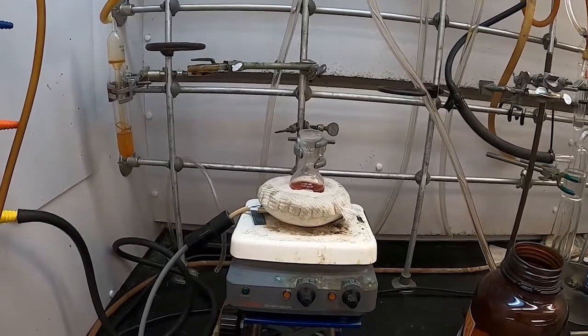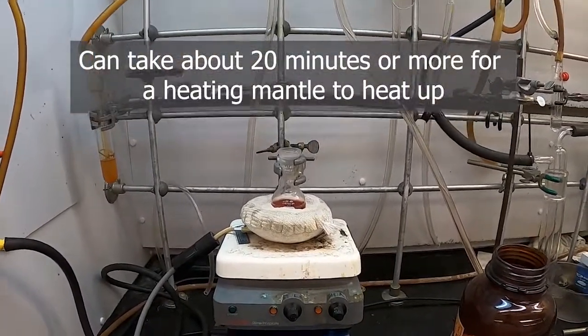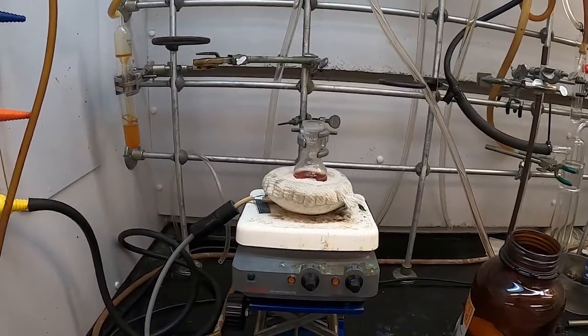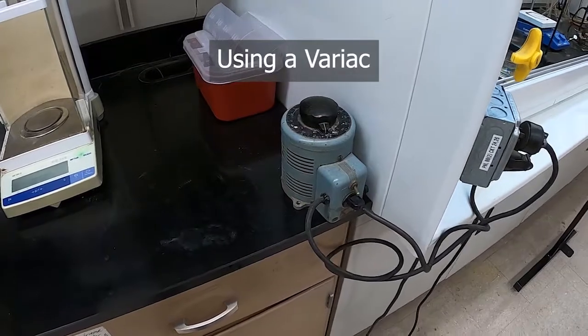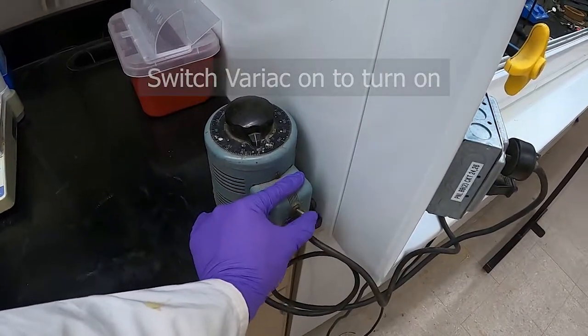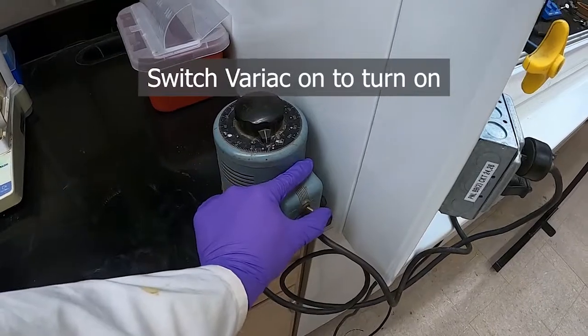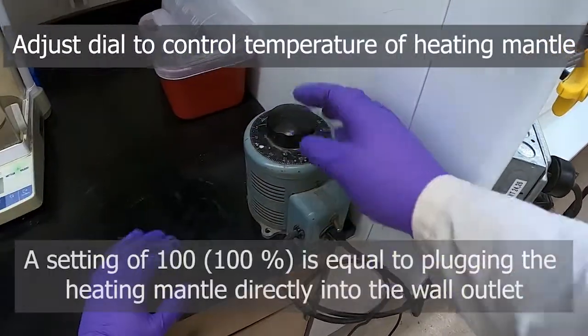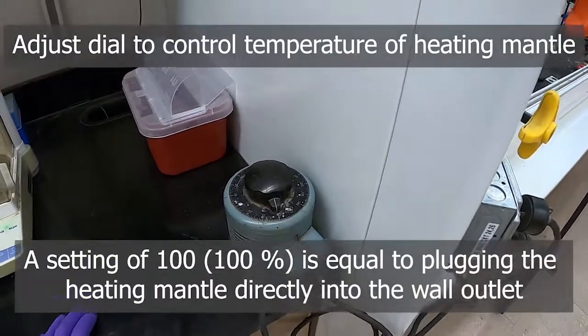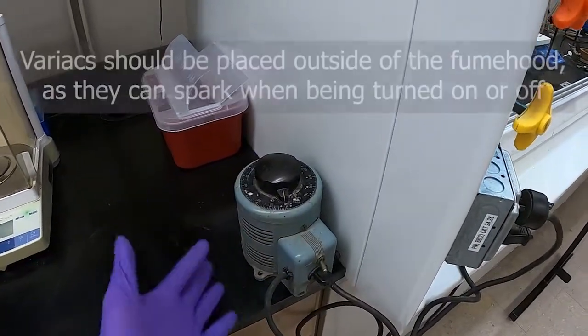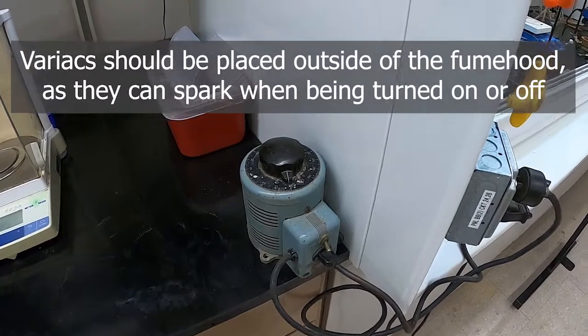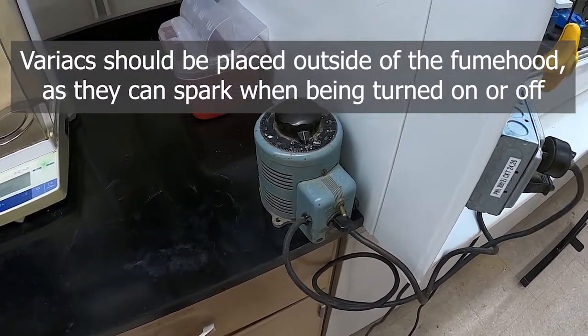Heating mantles heat up pretty slowly. It takes about 20 minutes really before they see much of a change from room temperature sand, so it's something to be aware of if you're planning to use one. A note on variacs: they often have a switch on them to turn them on and off, and then the dial on the top is what determines the power output. I've heard it said that variacs can generate sparks, and in some instances that's a bad idea to be near your experiment, so it's a good idea to have your variac outside of your hood to prevent any accidental ignitions.